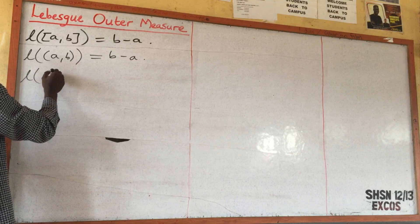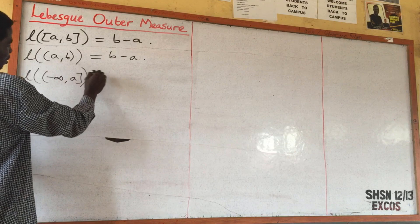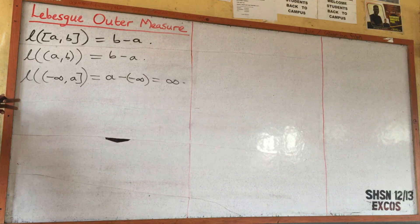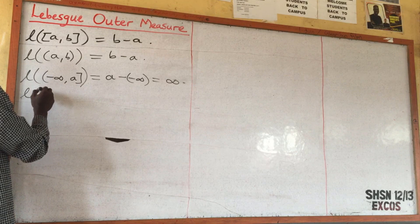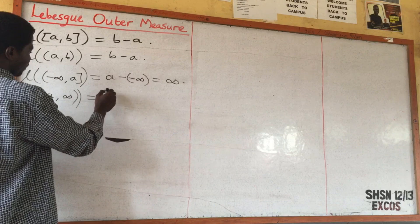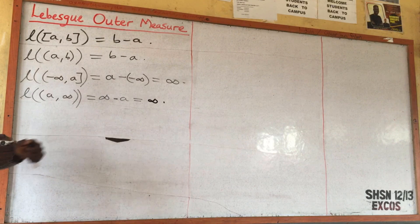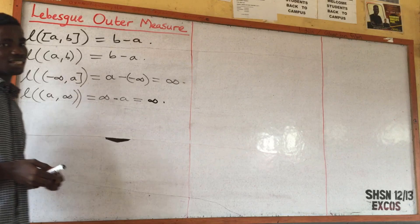Now, what will be the length of the interval from minus infinity to a? The length of this one will be a minus minus infinity, so the length will be infinity. The same happens for [a, infinity): that is infinity minus a, and since you have infinity as the upper bound, the answer is still infinity, because infinity minus any number is infinity.